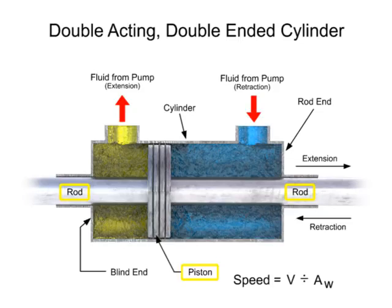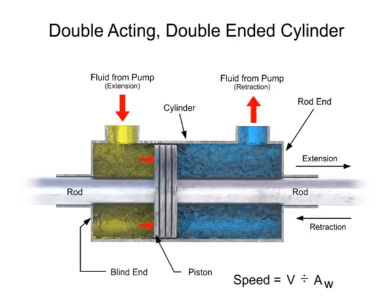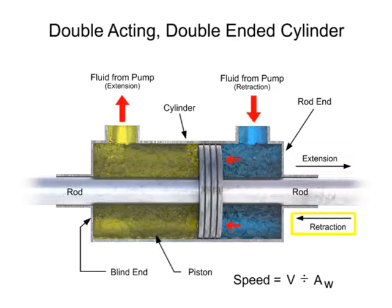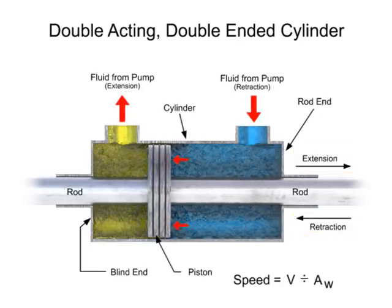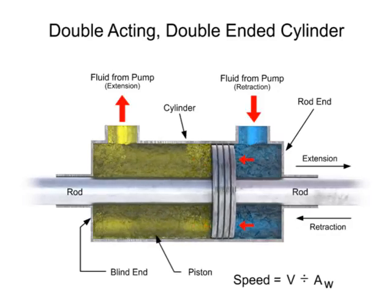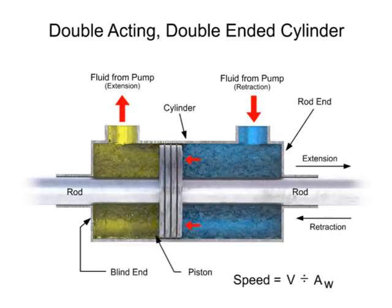Double-ended cylinders work similarly to single-ended, but are used when a constant speed is required for both the extension and retraction strokes. Since the flow rate is the same and the piston areas are the same, the speed for extension and retraction is also the same.